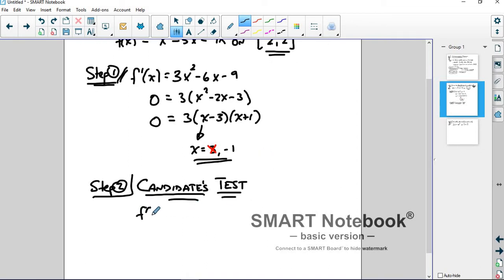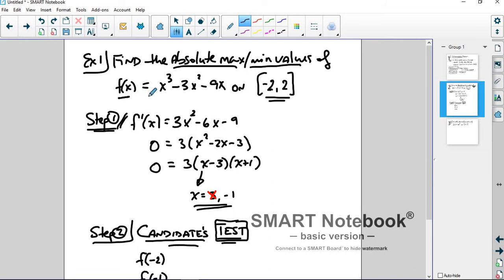There's only three of them. Now if there were 27 we might not want to do this, but there are three in this case. And so we test them. Where do we test them? We test them inside the original function, not the derivative. We're looking for the absolute max and min of the f(x) function. So that's where we plug them in, because the largest value is your max, the smallest value is your min.